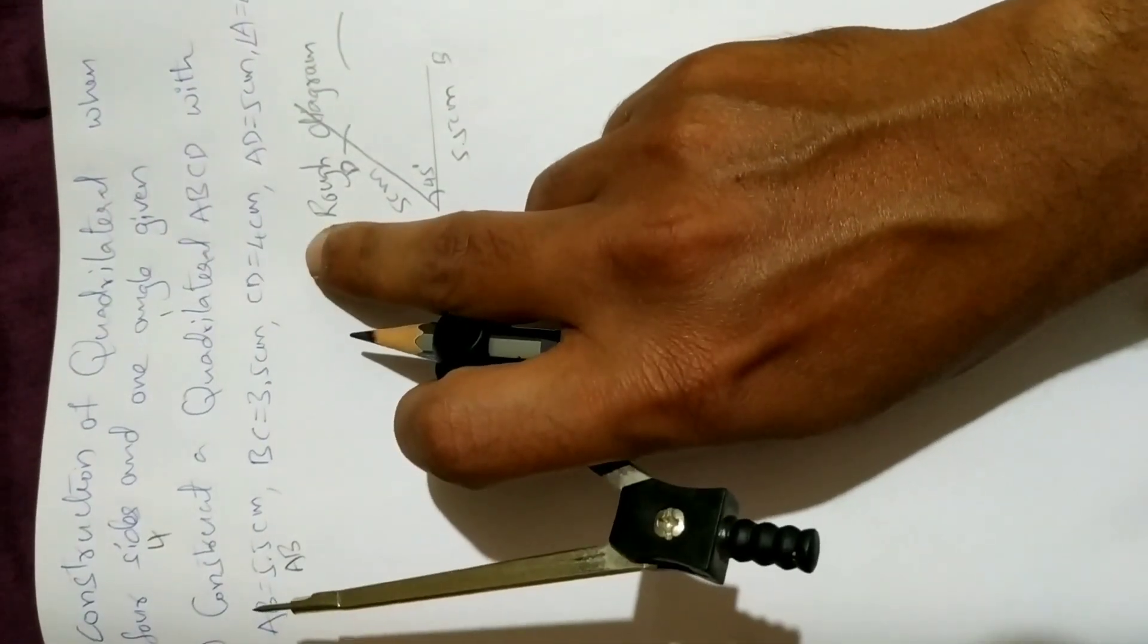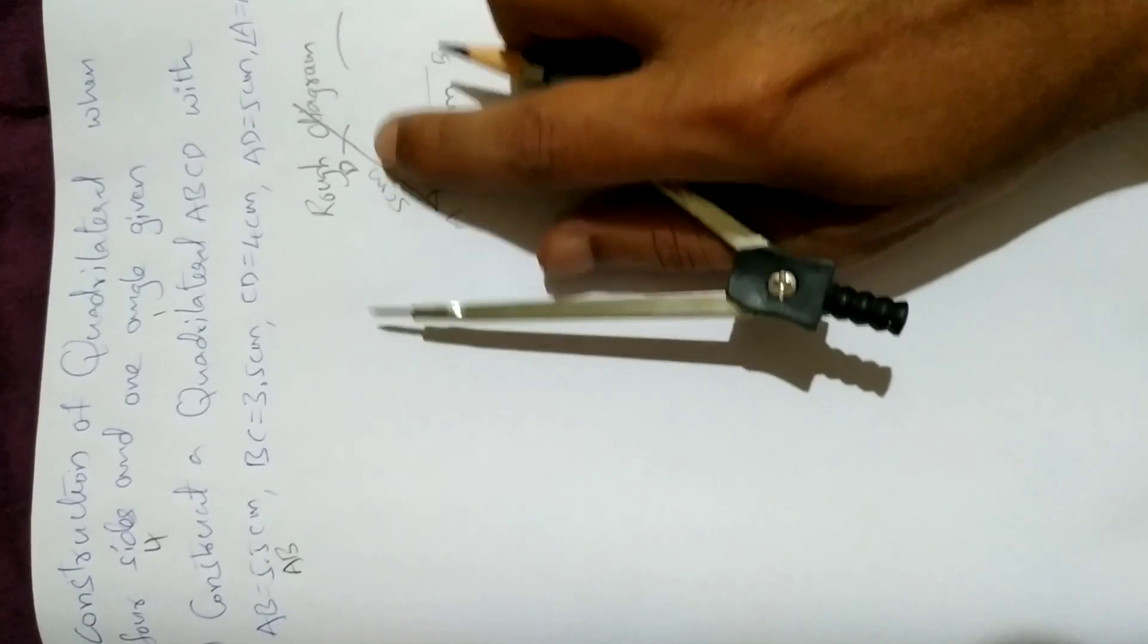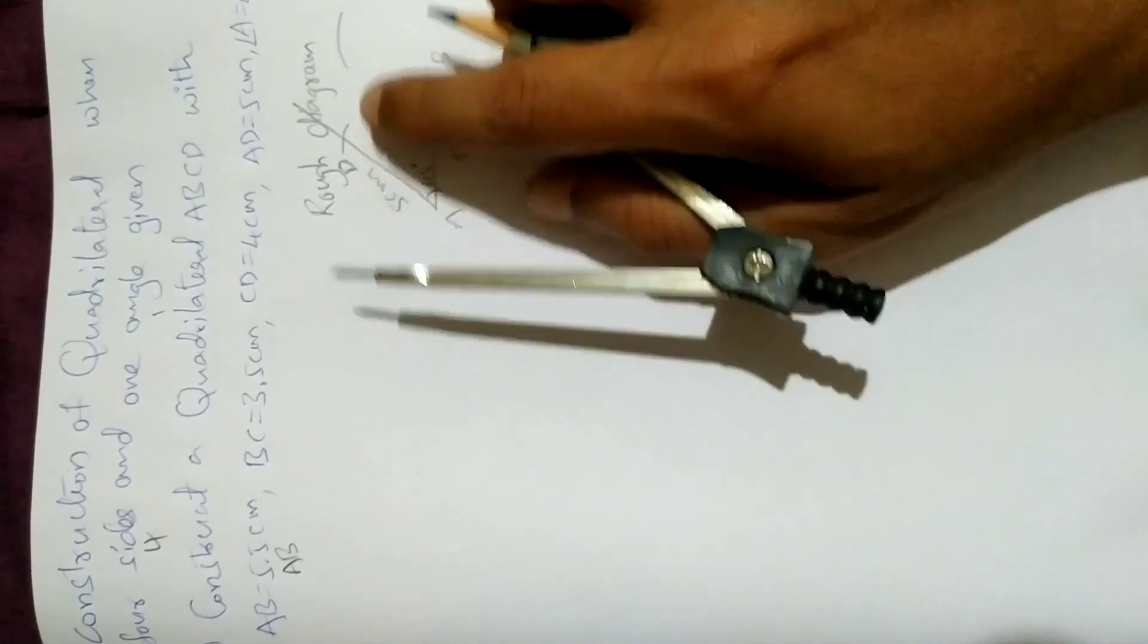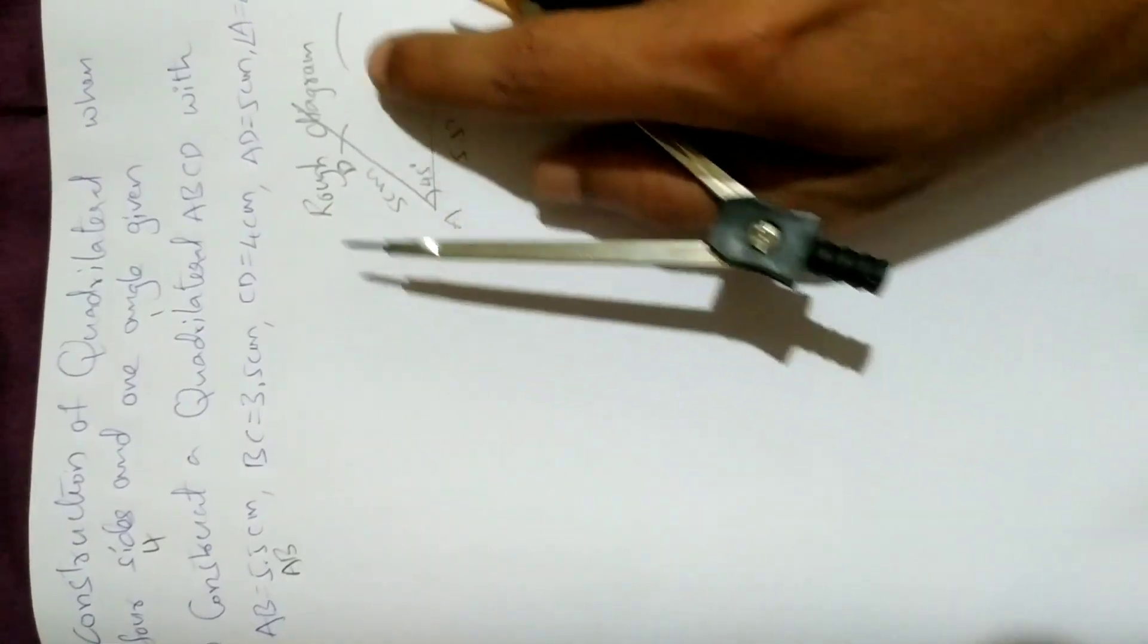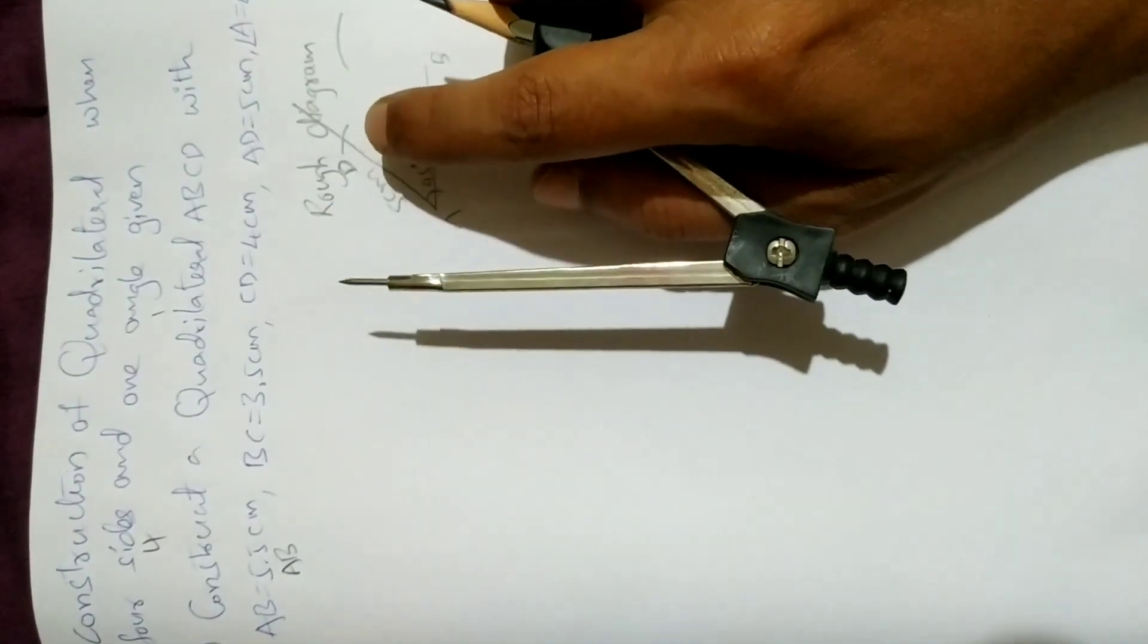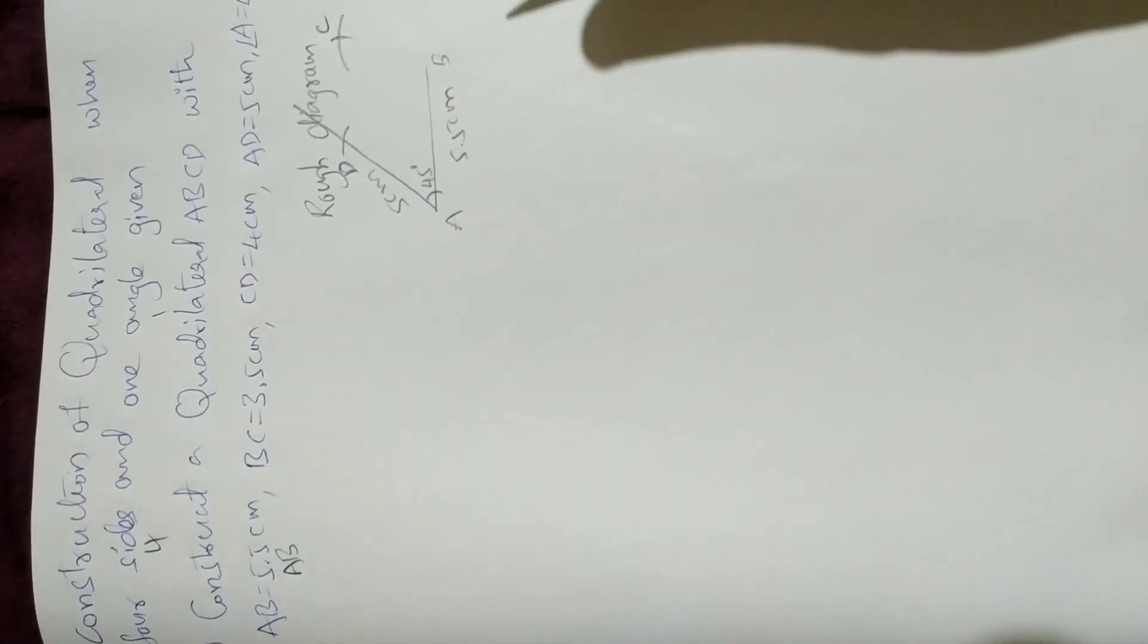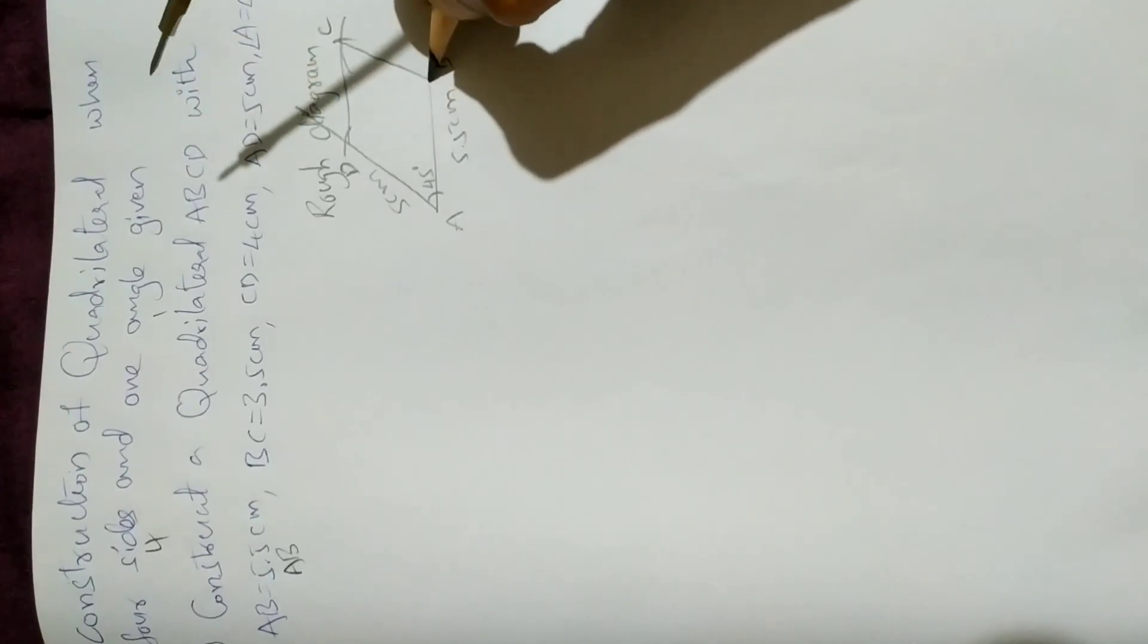Next BC is 3.5, so take 3.5 centimeters radius from point B and draw an arc. CD is 4 centimeters. CD and DC are the same. So with 4 centimeters radius, cut this arc from point D. So 4 centimeters radius, this is D.